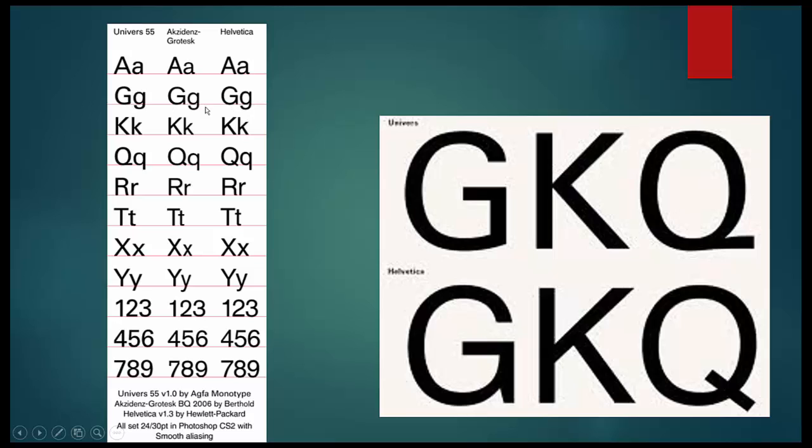So here we can see some examples. You can see the G and how it lacks the spur. The K, the diagonal strokes meet at the stem in Universe and Akzidenz Grotesque, and Helvetica does not do that.